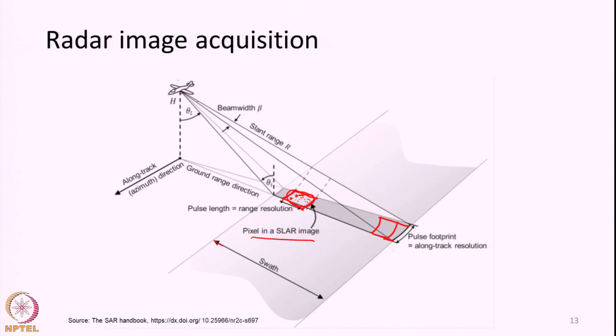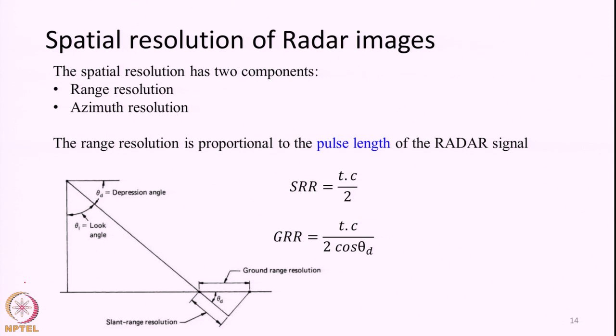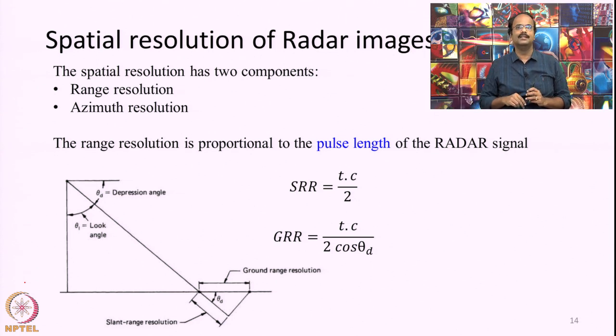Most likely, features present within a single resolution element may not be resolved independently. For example, if we have 2 towers within the same pixel element, we may not be able to see those 2 towers separately — we may think there is only 1 tower there. But if those 2 towers are located in 2 different pixels, then we can identify them as tower 1 and tower 2. So the pixel size — the dimension of the pixel in both azimuth and range direction — will influence whether we are able to resolve or distinguish 2 features on the ground. First, we will discuss the pixel size or resolution in the range direction, what we call range resolution.